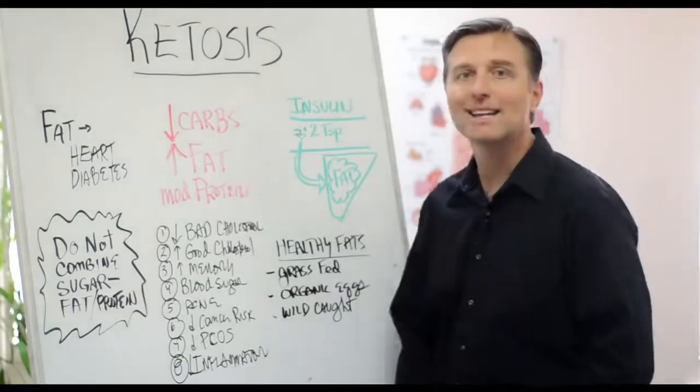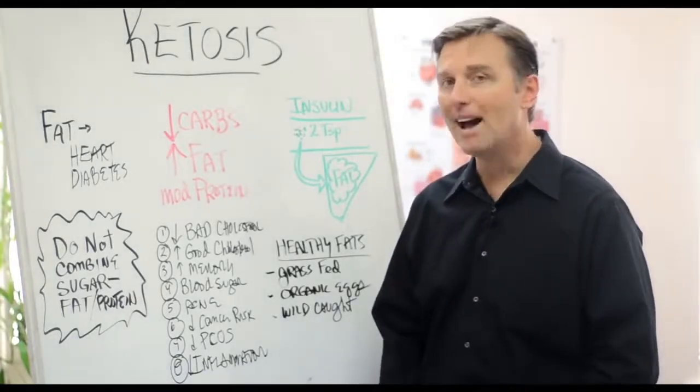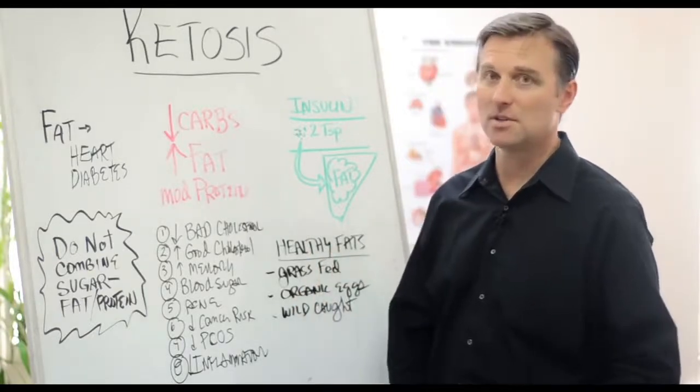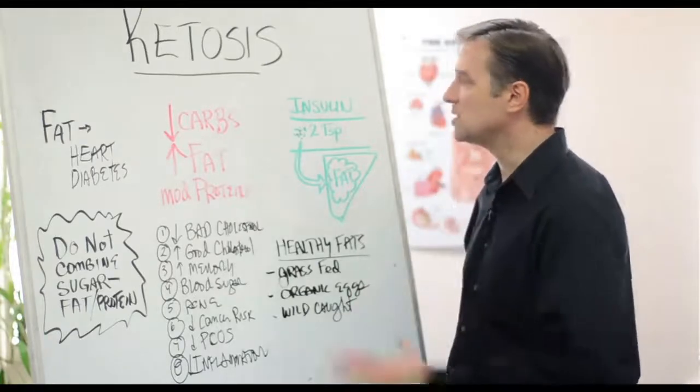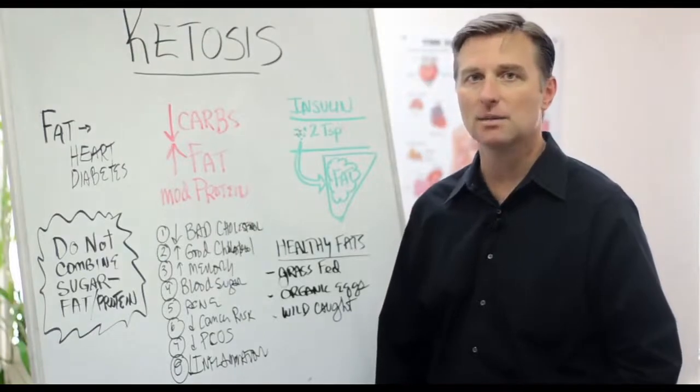Our bodies were not designed to consume the amount of sweet or sugar that we consume. The average person eats 145 pounds of sugar a year. So that's just insane. Anything more than two teaspoons is going to be very toxic to the body.